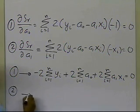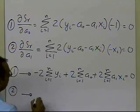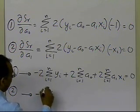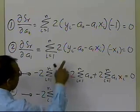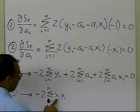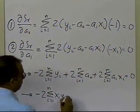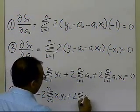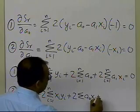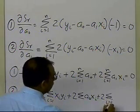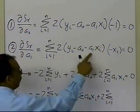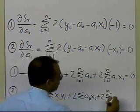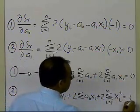From the second equation, I get minus 2 summation (i=1 to n) of xi·yi, because I have yi and xi there, then plus 2 summation of a0·xi, plus 2 summation (i=1 to n) of a1·xi squared, because I'll have xi multiplied by xi, and that's what I get from there.